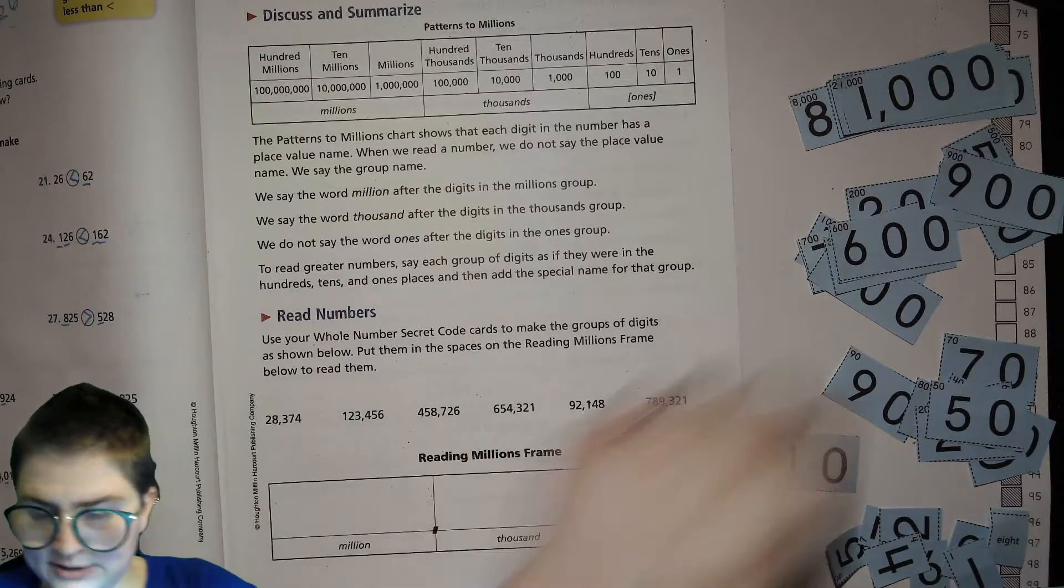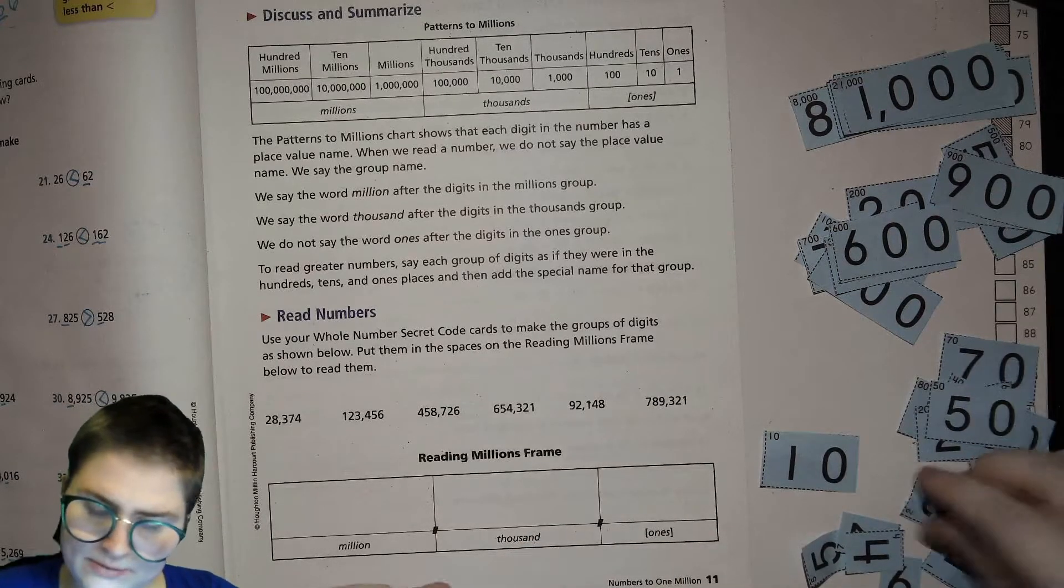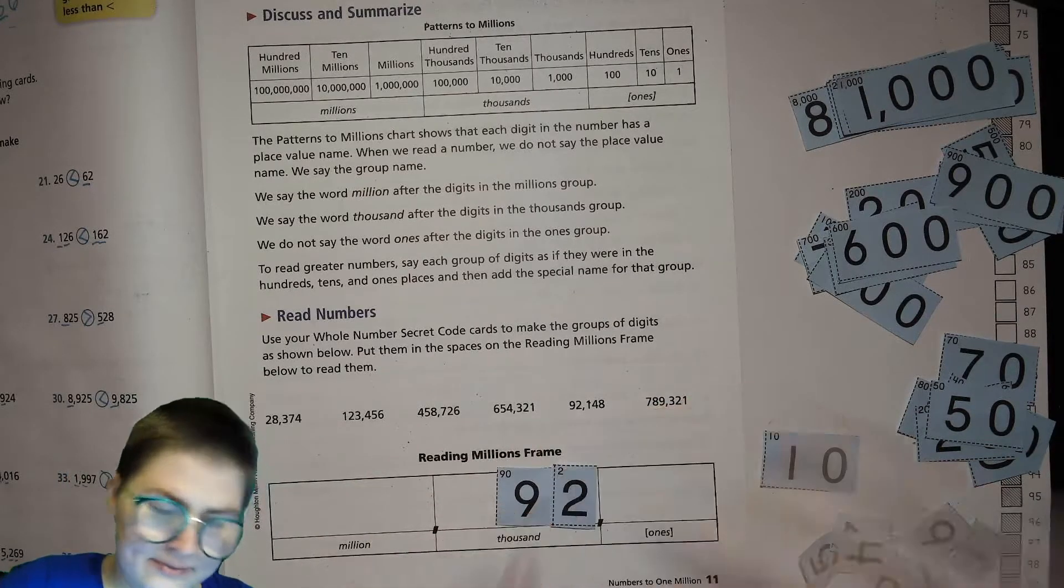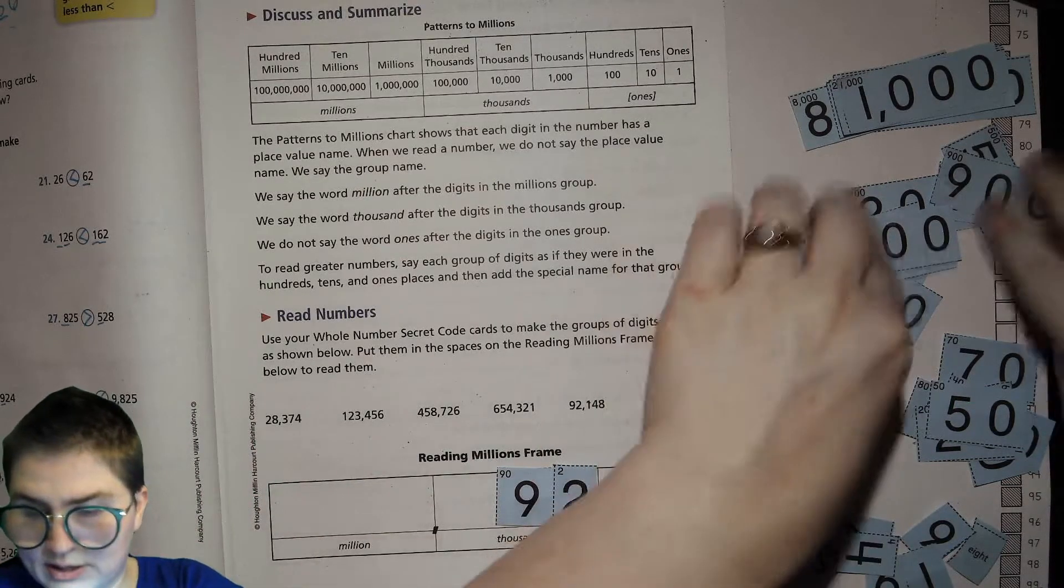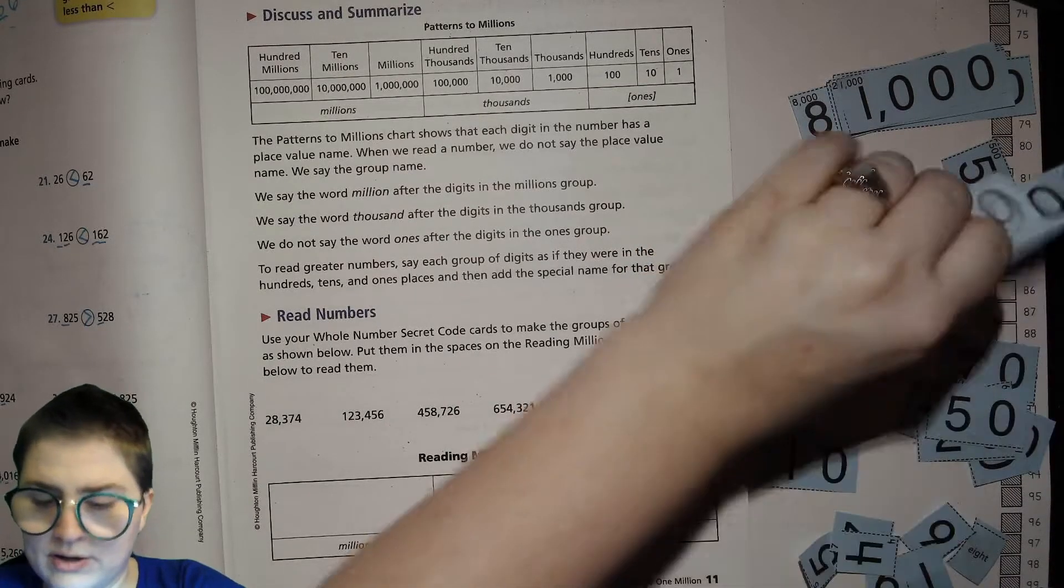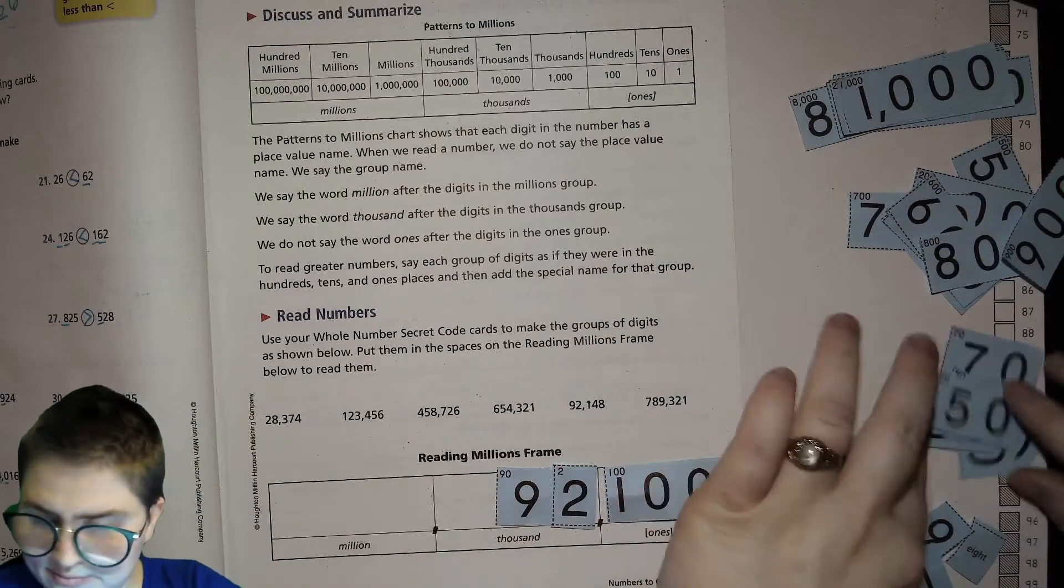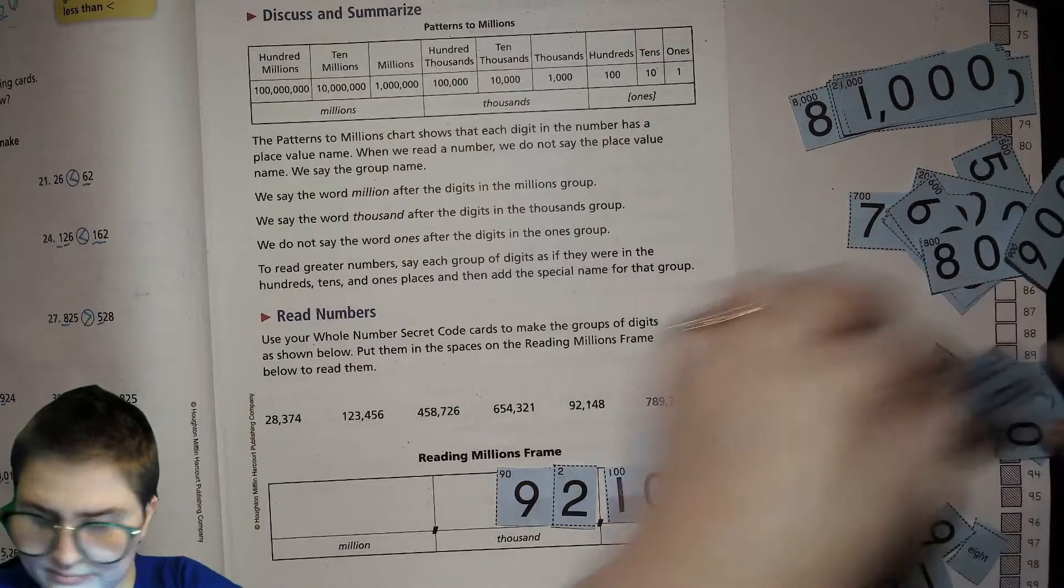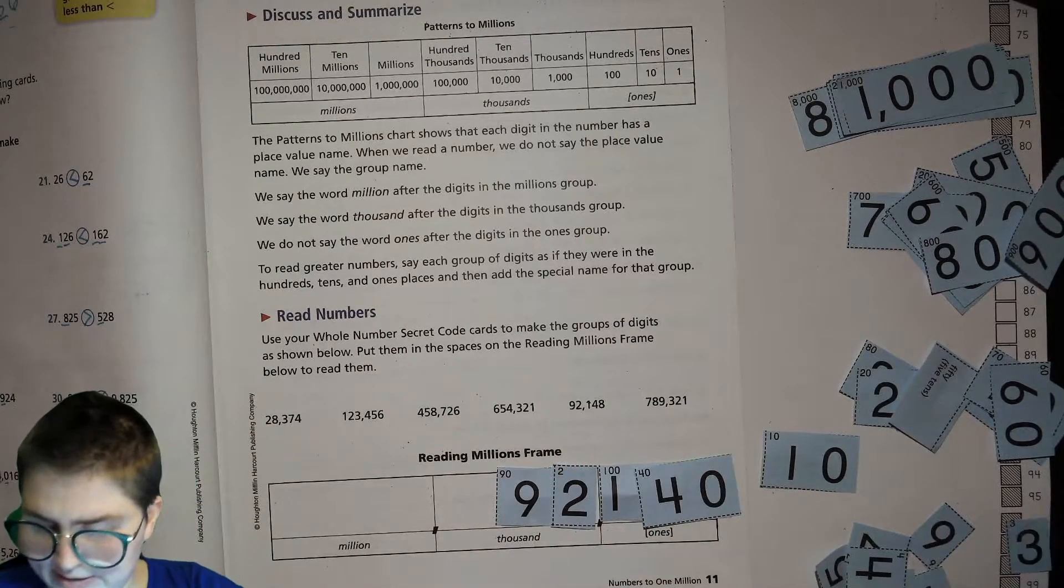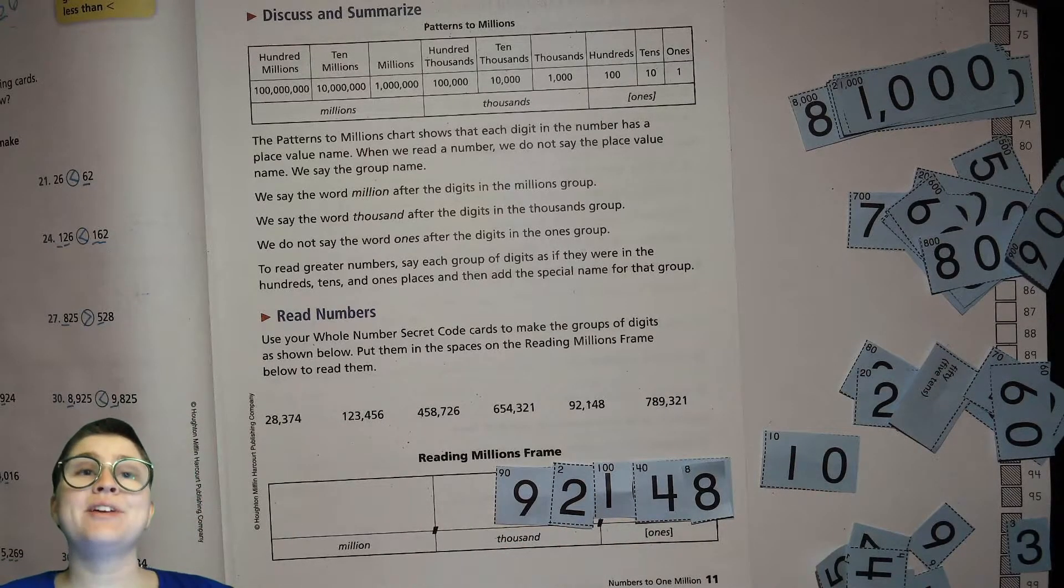92,148. So 92,100, my 100, there it is, 40,000, my 8,000. 92,148.